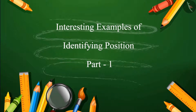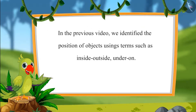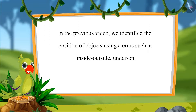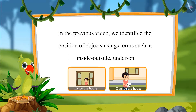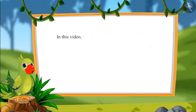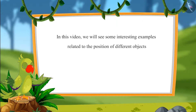Interesting Examples of Identifying Position, Part 1. Children, in the previous video we learnt how to identify the position of different objects using terms such as inside, outside, under, and on. In this video we will see some interesting examples related to the position of different objects.